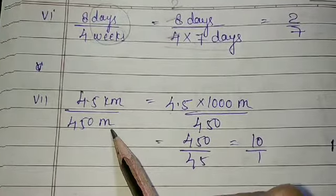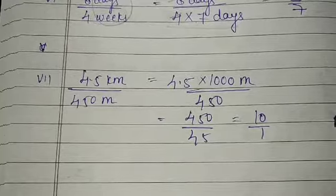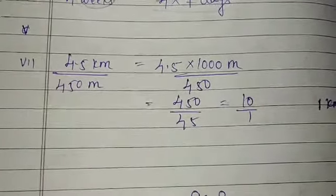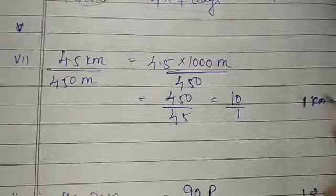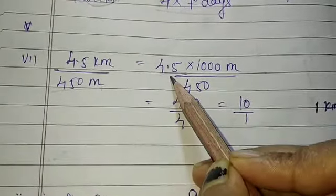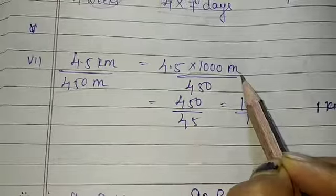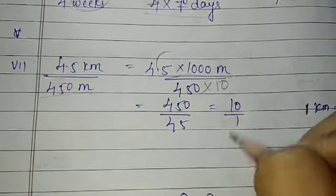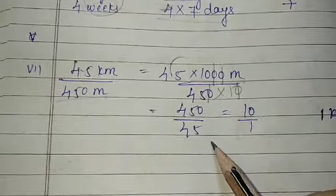Now 4.5 kilometer over 450 meter. Dear students, these two units should be same. Otherwise you can't cancel these two terms. If you will cancel, then your answer will be wrong. So first try to convert. Before converting this one, you should know 1 kilometer is equal to 1000 meter. Either you can convert this meter in kilometer, in points you will get. So 4.5, if I want to convert this into meter, then I have to multiply this particular term with 1000. Just see, if 1 point is there, then downside 1, 0 it should be there. With this 0, this will cancel. With this 0, this will cancel. This is 450 over 45 and the ratio is 10 is to 1.